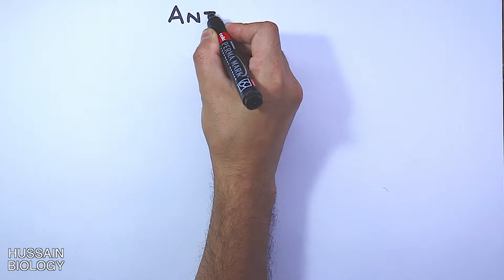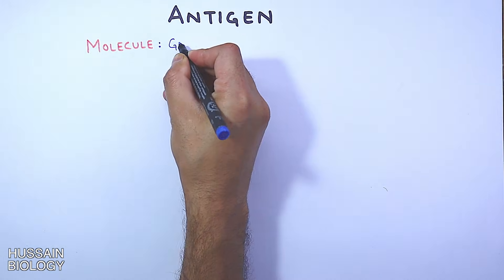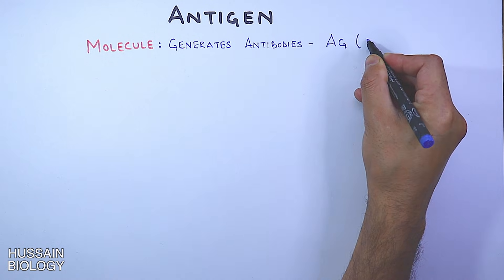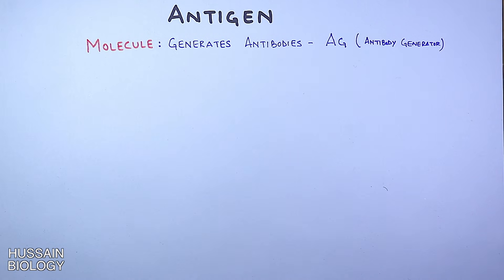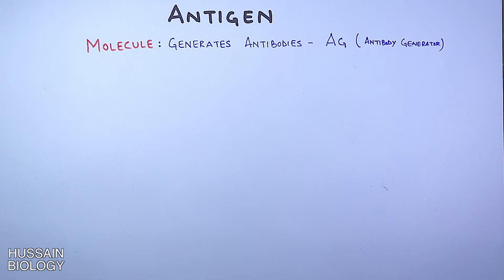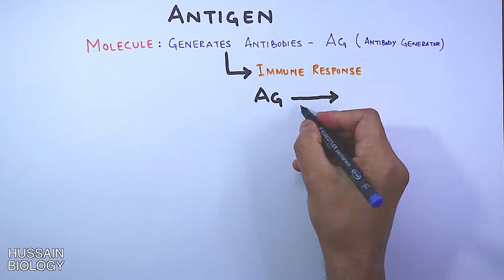In this video we will be discussing the antigen, its structure, types, and its binding sites. In simple terms, an antigen is a molecule that is able to generate antibodies in our immune system. We refer to antigen as AG — antibody generator — but it must be noted that there are some antigens that do not generate antibodies, yet they are still antigens. These antigens evoke the immune response when the antigen binds the antibody.